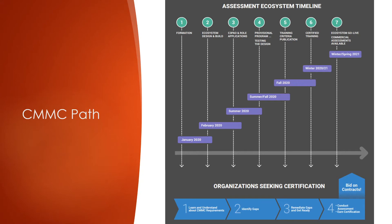Organizations should also consider receiving a readiness assessment from a registered provider organization, or RPO, before they actually receive that assessment. Once an organization believes that they are ready to be assessed, they need to find a CMMC AB approved third-party assessor organization, or a certified assessor, that is approved to assess and certify at the maturity level that the organization is trying to obtain. Once the assessment has been completed, you will then be able to review the assessment and all of the auditor's assessment findings with them.